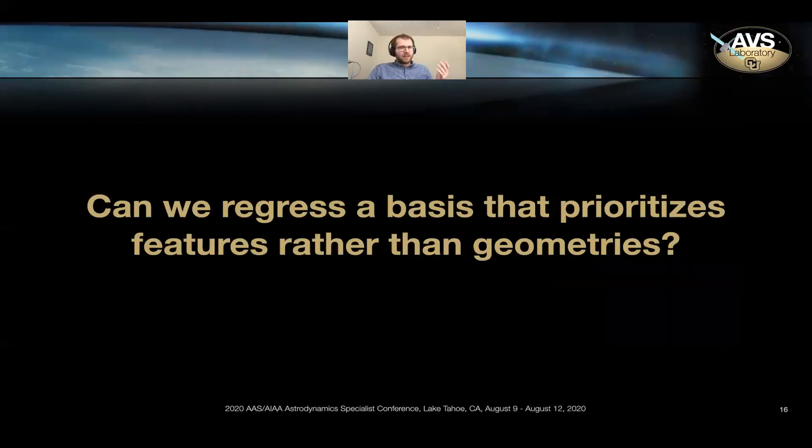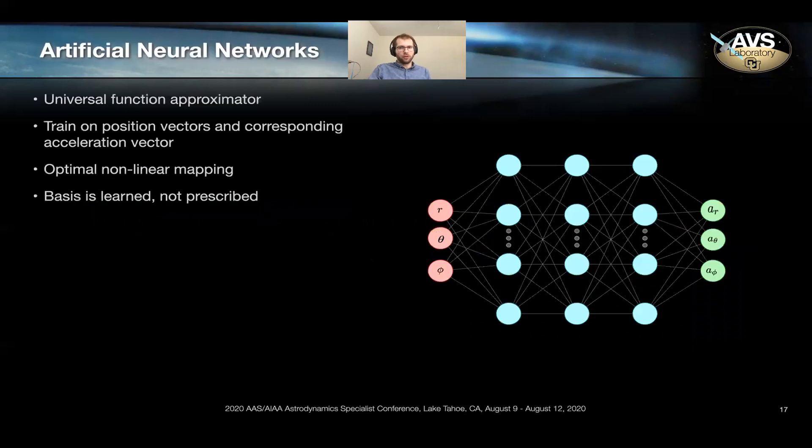So that begs the question, can we regress a basis that instead prioritizes features rather than geometries? And that brings us back to the artificial neural network approach. So artificial neural networks are universal function approximators, assuming you have sufficiently deep or sufficiently wide networks. And they work by taking training data, in this case position vectors, and mapping them to a set of output vectors, in this case the acceleration. And the neural net updates weights to accommodate an optimal nonlinear mapping between that input and output space. And the convenience of this approach is that the basis, the representation of the gravity field is not prescribed. It is not expected to be similar to a spherical harmonic basis. It is instead learned and accommodates the data best it can.